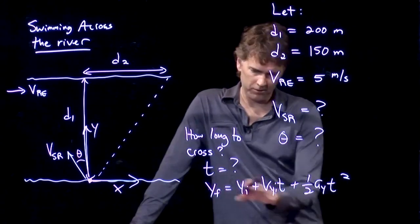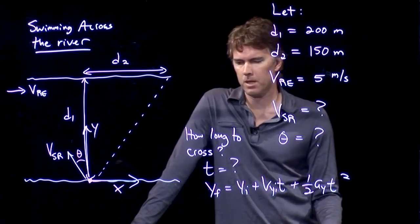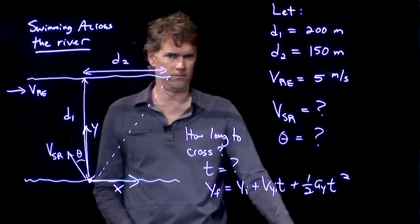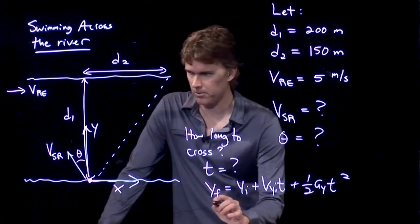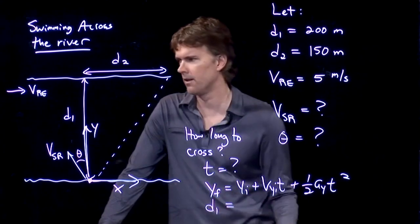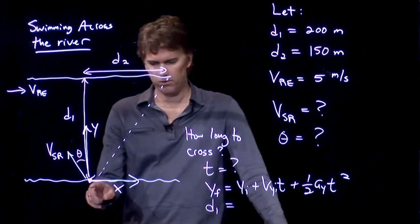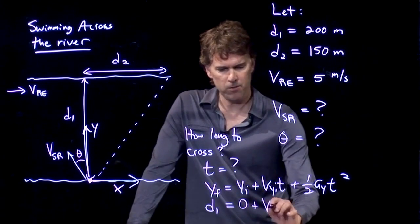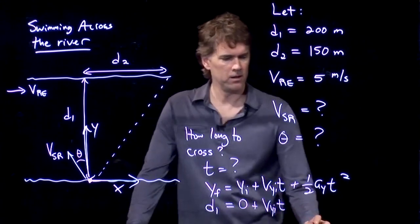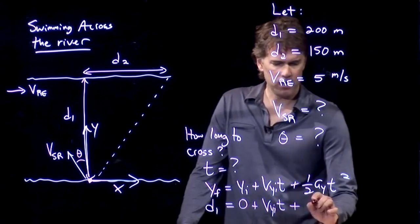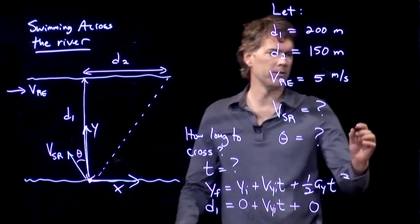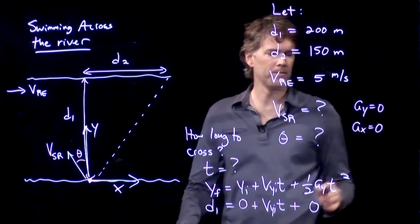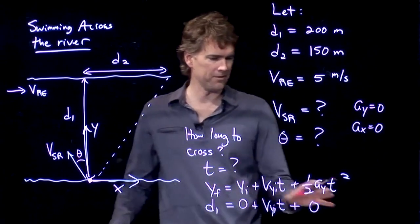And if we do that, then we can simplify this equation quite a bit. Because what is y final equal to in this case? y final is just equal to d1. y initial is where we started, which is 0. V y initial, we're not really sure about that yet. A is 0. That's one of our givens. We're going to say that there's no acceleration in this problem. It is just constant velocity motion.